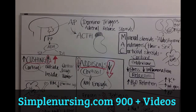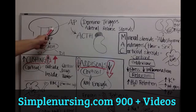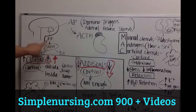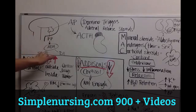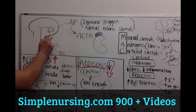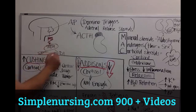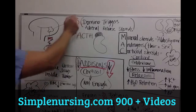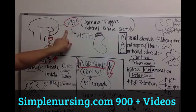All hormone regulation really starts in your pituitary. You have an anterior pituitary and a posterior pituitary. I did lectures on the posterior pituitary — how it controls ADH and SIADH and diabetes insipidus. But we're not talking about that here. What we are talking about is your anterior pituitary.